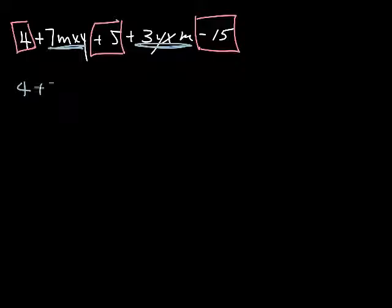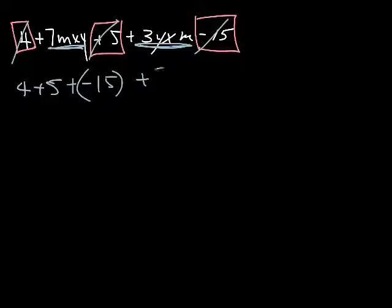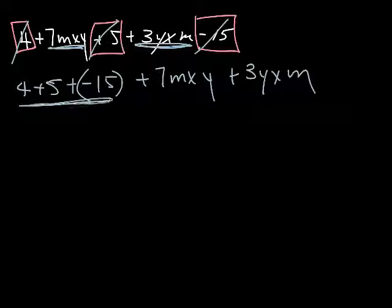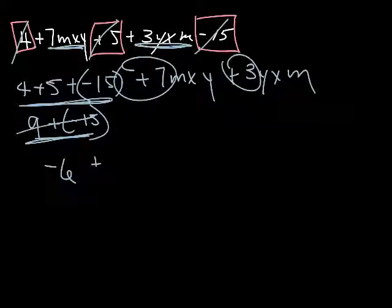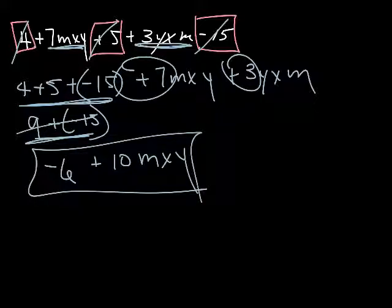So let's do 4 plus 5 plus negative 15, because those are my first three. Then let's put 7MXY together with 3YXM. Let's combine those — 4 plus 5 plus negative 15 gives us negative 6. Wait, that's 9. Signs are different for the variable terms, so we take the difference between the two and put the sign of the largest one there. 7 plus 3 gives us 10MXY, and we've taken care of all our like terms.